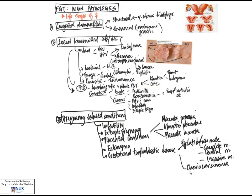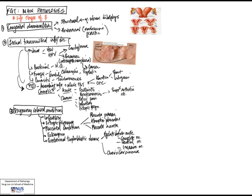Also in this group is choriocarcinoma, which is the tumor of the cyto- and syncytiotrophoblast. Choriocarcinomas tend to invade into blood vessels very readily, because that is what trophoblastic tissue does. Therefore, these tumors are often very hemorrhagic and they also often present with early metastases — for example, to the lungs — but they are fairly responsive to chemotherapy.